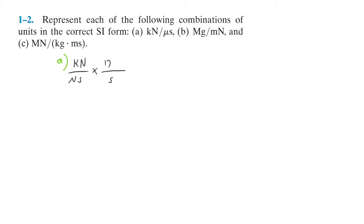For every second there are 10 to the 6 microseconds, so those cancel, and that leaves us with 10 to the 6 times kilonewton, which is 10 to the third. So that gives us 10 to the 9th newtons over a second, which is the same thing as a giganewton over seconds.